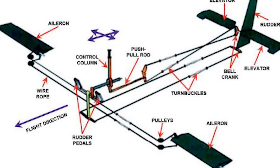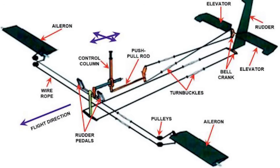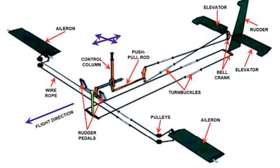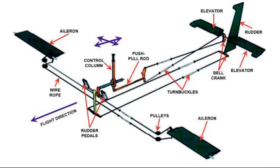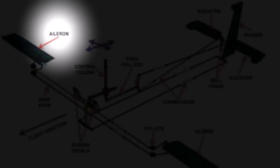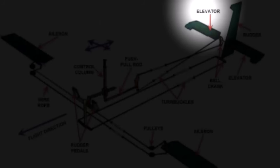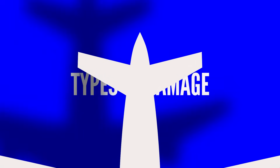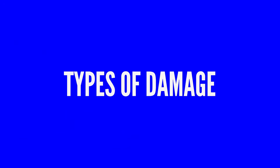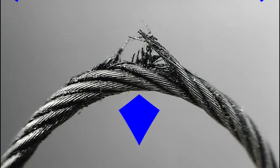Aircraft control cable damage can pose significant risk to flight safety as it directly affects the pilot's ability to control various flight surfaces such as ailerons, elevators, and rudders. Let's discuss the different types of damage and what to look for.